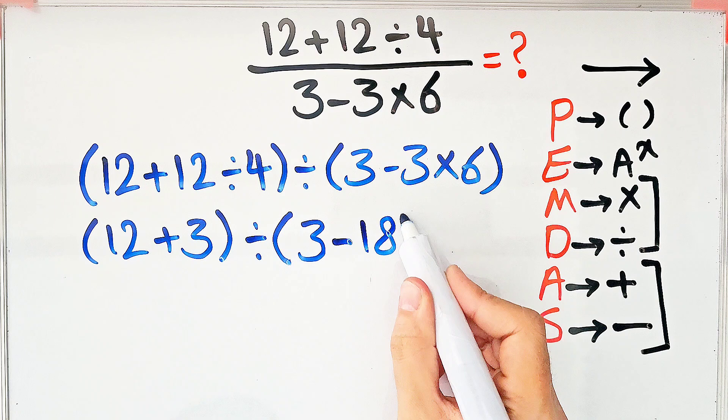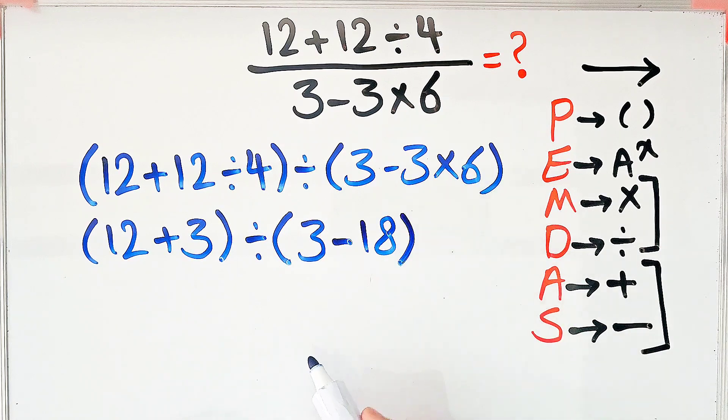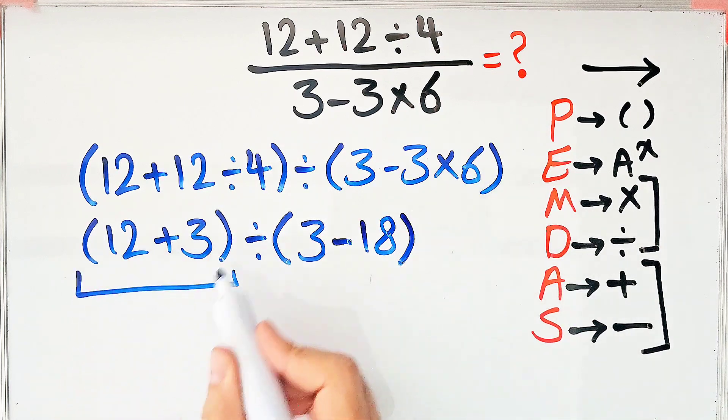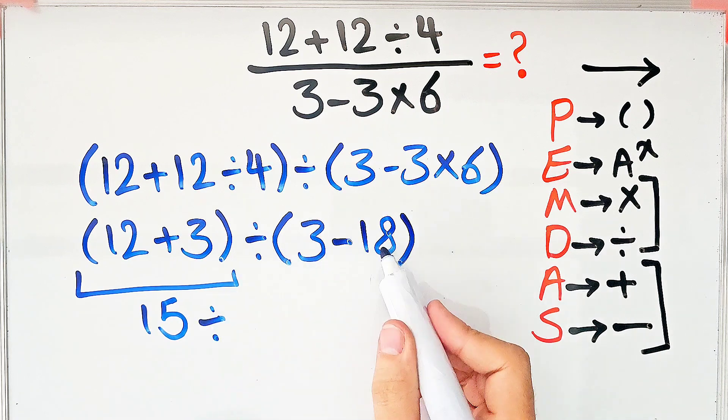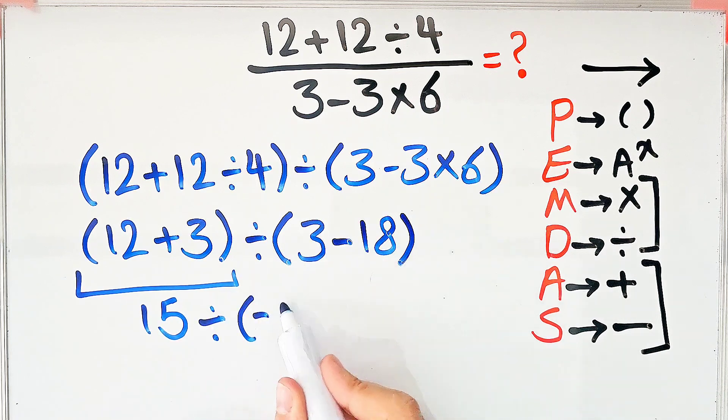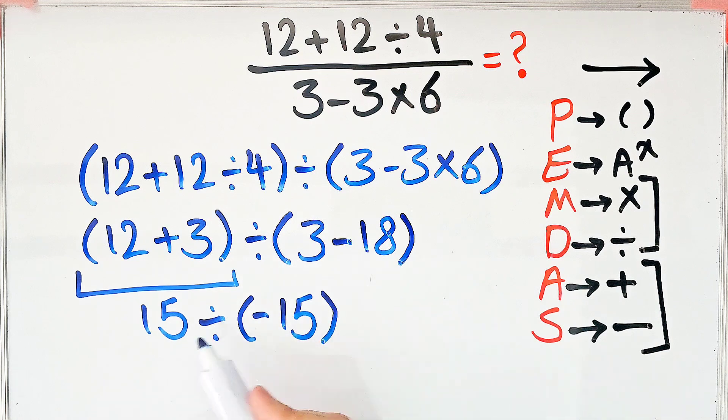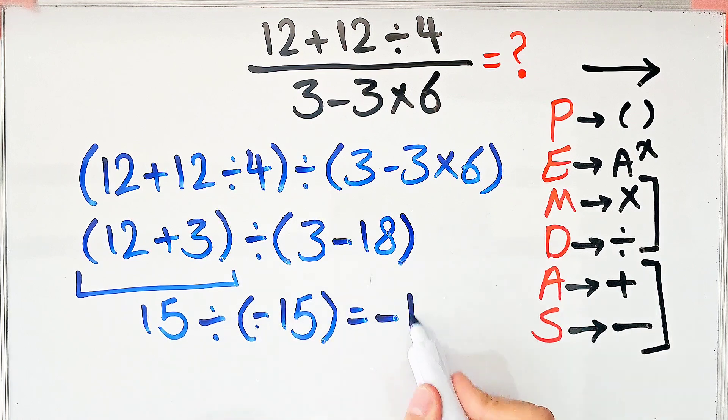12+3 equals 15. We have 15 divided by (3-18), which equals -15. And 15 divided by -15 equals -1.